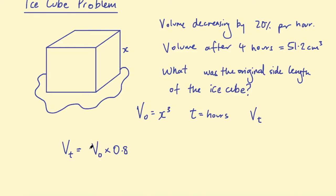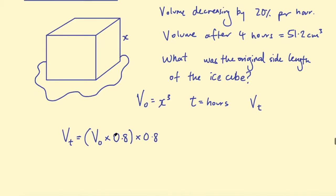If it was after two hours, we'd have to take this answer and multiply that by 0.8 again. So we've decreased it by 20% after one hour, and then after two hours we'd have to decrease it by 20% again. So we'd multiply that number by 0.8. Then if we were to decrease it again by 20% after three hours, we'd have to multiply all of that by 0.8 again. So is there an easier way to write this 0.8 multiplying a number of times?